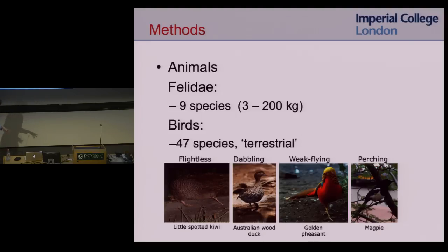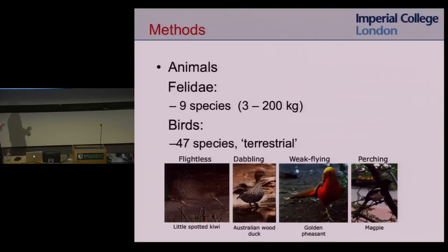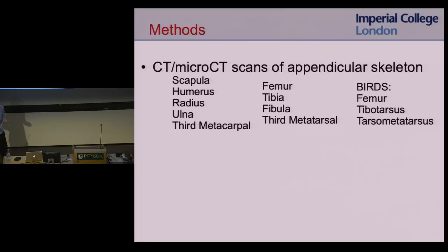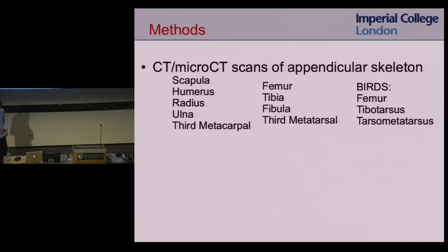These birds can be divided into four groups: roughly flightless birds such as the kiwi, which doesn't even have wings; dabbling birds such as the wood duck, which spends a lot of time paddling in water or walking on land; weak or burst-flying birds that can fly but only in short spurts; and perching birds like the magpie, which spends a lot of time standing in trees. We took CT scans or micro-CT scans of the limb bones — fore and hind limbs for cats, just the legs for birds.